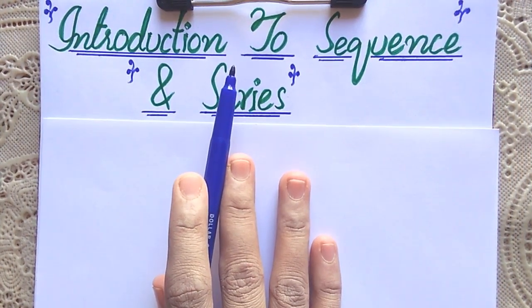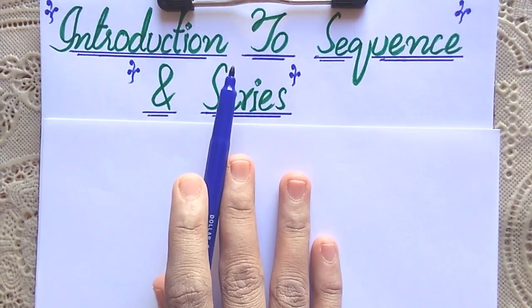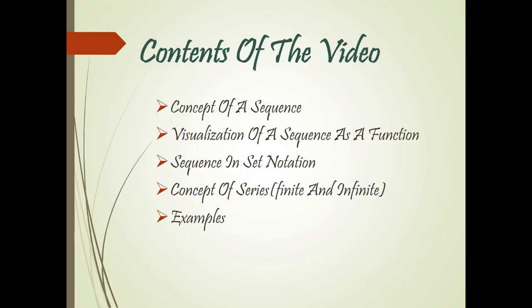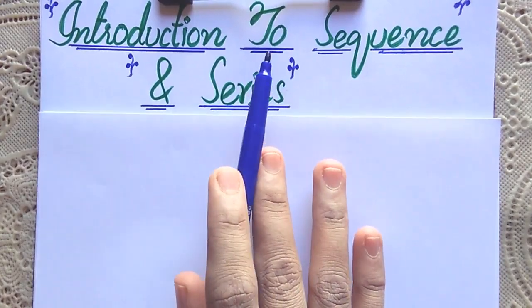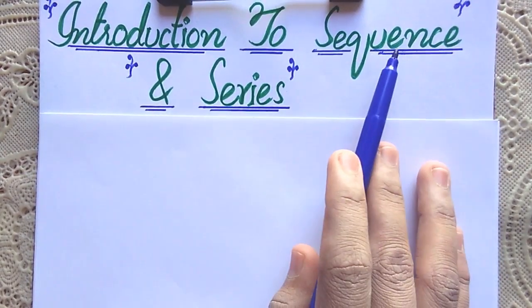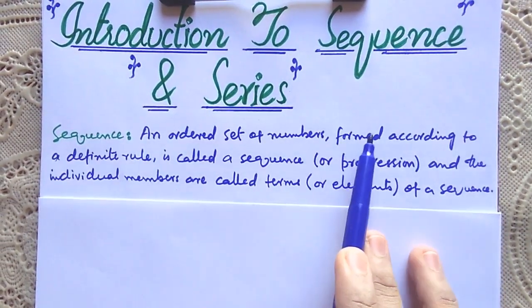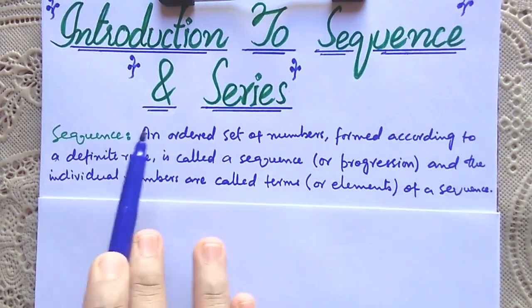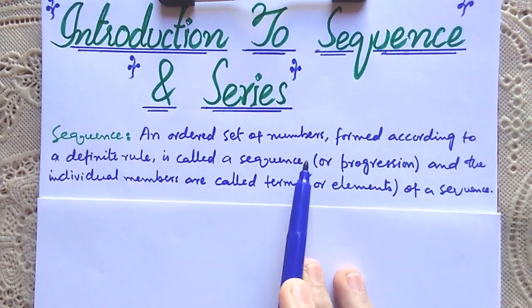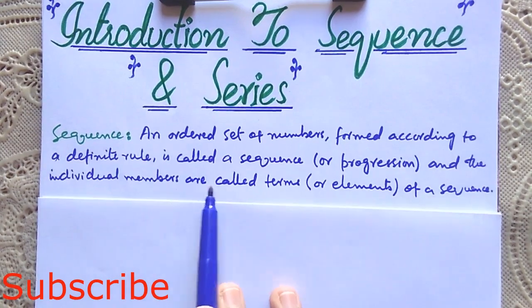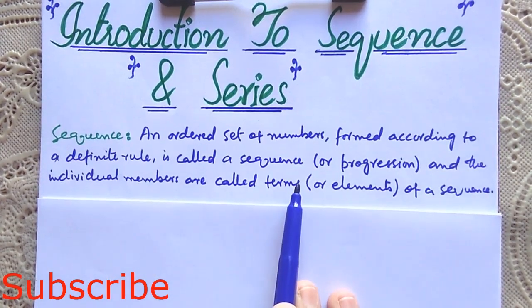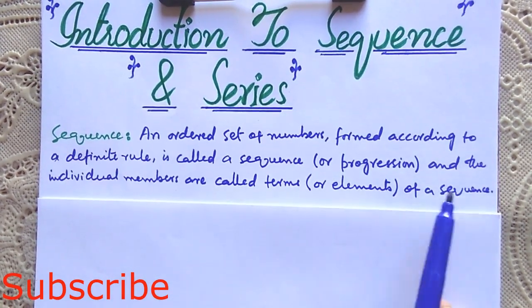Welcome to the Formula Foundation. Let me first give the formal definition of a sequence. An ordered set of numbers formed according to a definite rule is called a sequence or progression. The individual numbers are called terms or elements of a sequence.